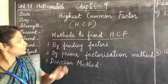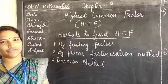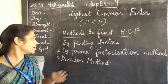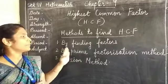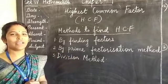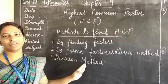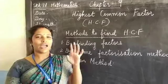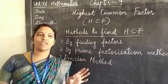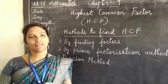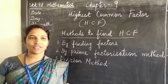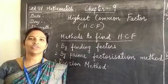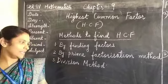We are learning 3 methods to find HCF. The first method is by finding the factors, the second method is the prime factorization method, and the third method is the division method. HCF is the highest number using which we can divide the given numbers. If 2 numbers are given, the biggest common divisor of those numbers is the HCF.